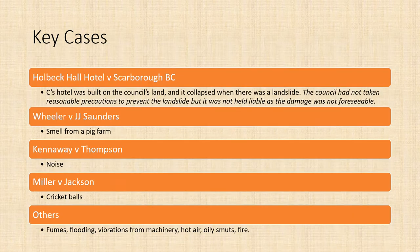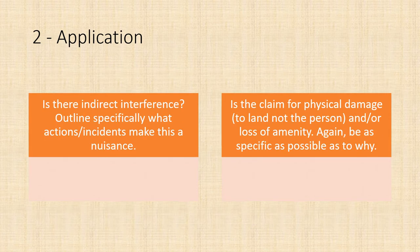Key cases here include Holbeck, Wheeler, Kennaway v Thompson, and Miller v Jackson. Other cases address interference through fumes, flooding, vibrations, hot air, oily smut, and fire. When applying the law, consider specifically: is it an indirect interference? What actions or incidents make this a nuisance — for example, is oily smut coming onto land, or has damage occurred to property because of the defendant's actions? Also, is the claim for physical damage to land or for loss of amenity? Remember, physical damage to the person cannot be claimed under this tort.